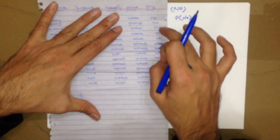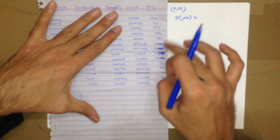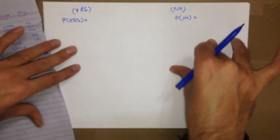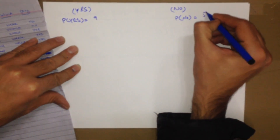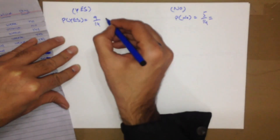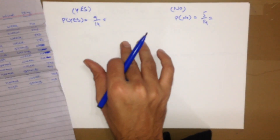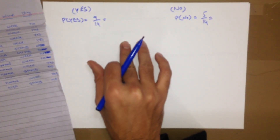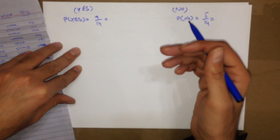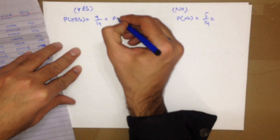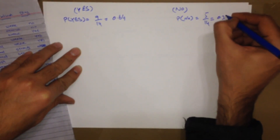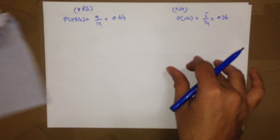There are a total of 14 instances: 9 yes and 5 no. So the probability of yes is 9/14 = 0.64, and the probability of no is 5/14 = 0.36.